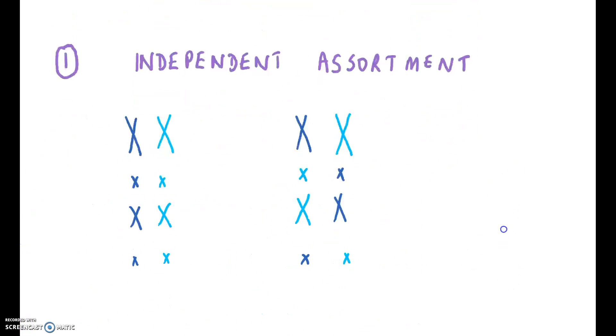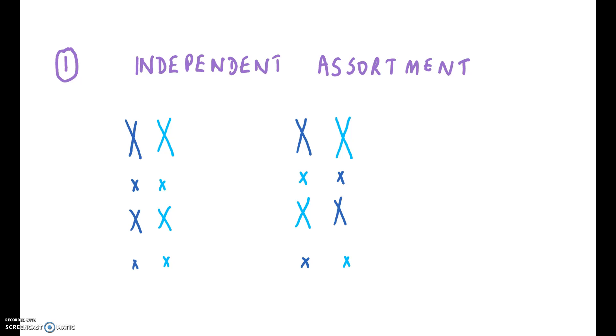The first is through independent or random assortment. When the homologous pairs align on the spindle fibre in prophase I, it is completely random which way around the pairs align.